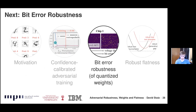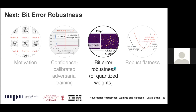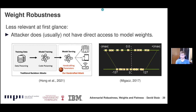This concludes the confidence calibrated adversarial training section. Adversarial robustness remains a very difficult problem, and a key challenge is building models that generalize robustness to attacks that cannot be foreseen at training time. Now I'll switch gears to talk about bit error robustness specifically in the weight space — not perturbations in the input space, but in the weight space.